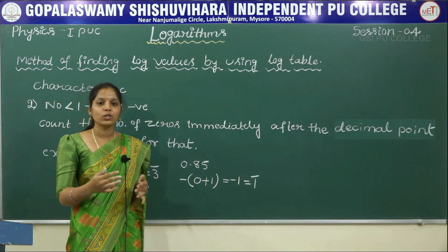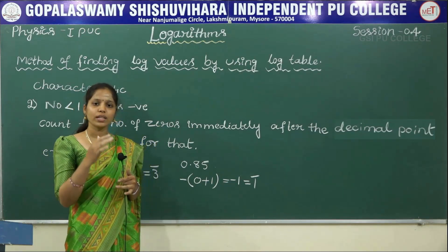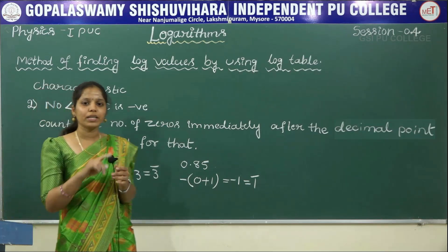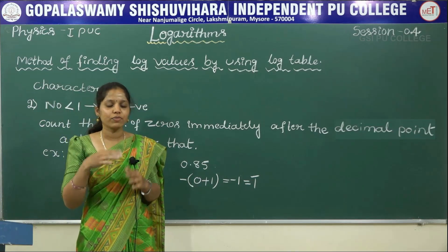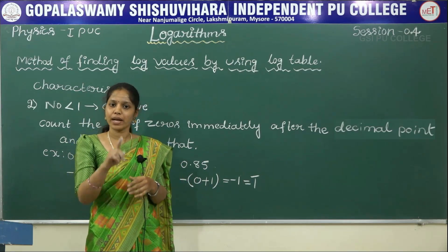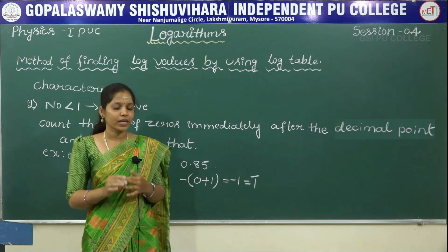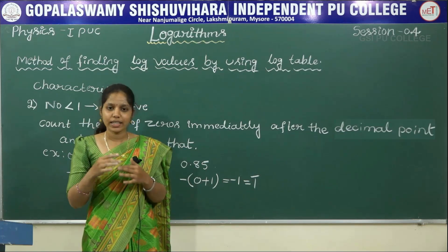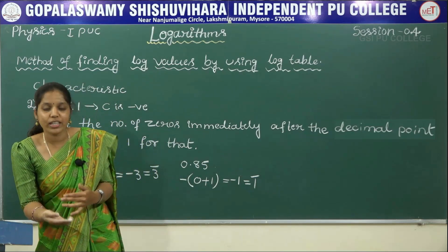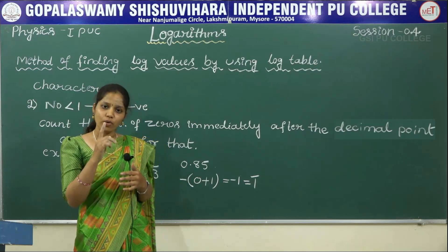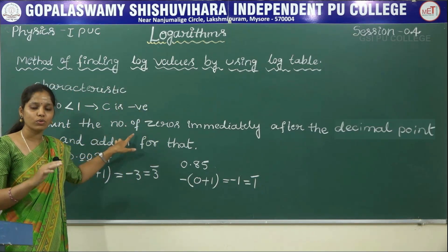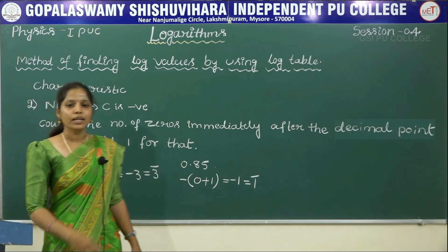These are the two cases we use to find the characteristic of a given number. If the number is greater than 1, count the digits before the decimal point and subtract 1. If the number is less than 1, count the zeros immediately after the decimal point and add 1.